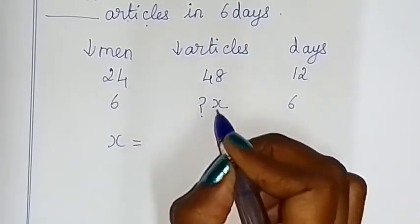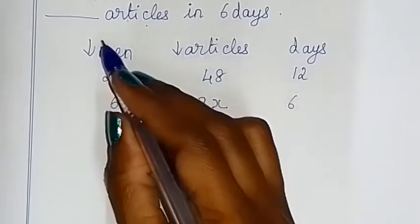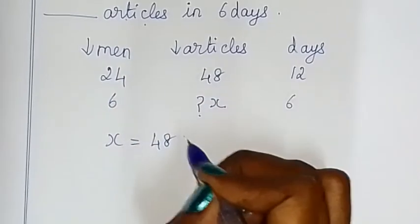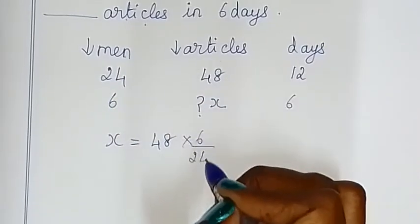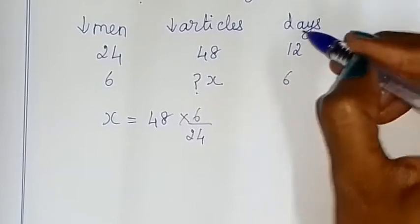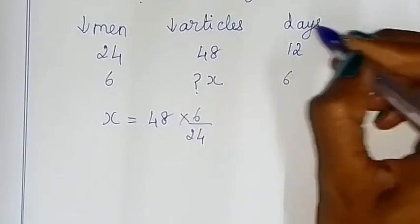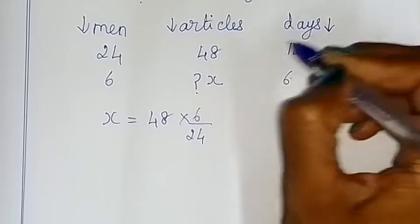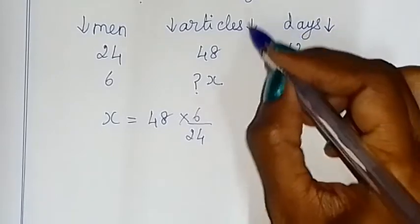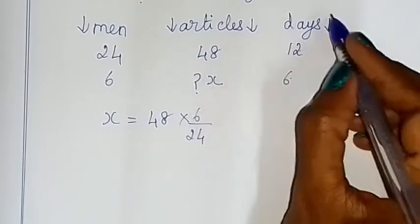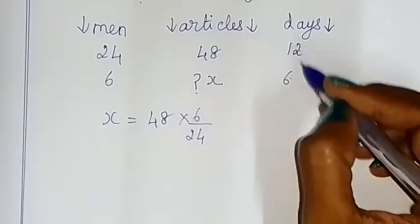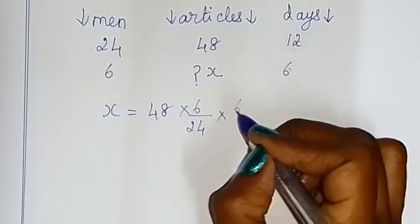So we are using the multiplying factor, using 48. For direct proportion, take the reciprocal — reciprocal of 6 men over 24. The multiplying factor we choose. For number of days, take the reciprocal — 6 by 12.